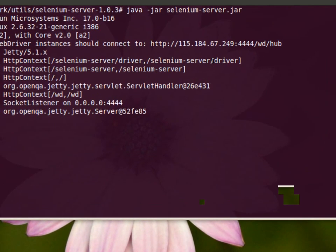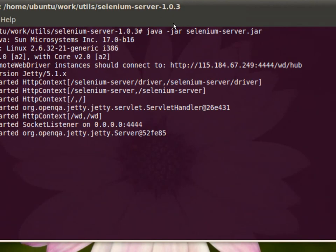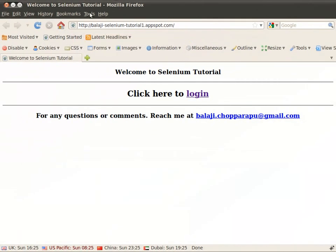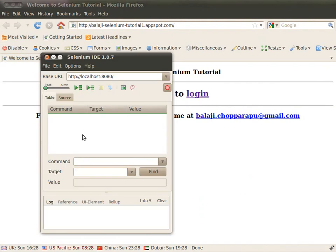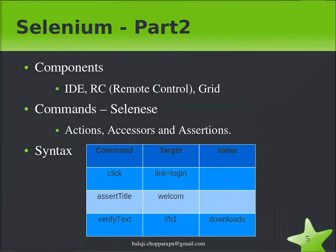We have the Selenium server running and the Selenium IDE. A Selenium command executes a set of commands against the Selenium server. A typical command consists of three things: a command, a target, and a value. A command can take two parameters or one parameter. For example, a click command takes a target like 'link=login' and executes the click command. The 'verifyText' command verifies whether a particular text element, like an H1 element, has a value of 'download' or not.